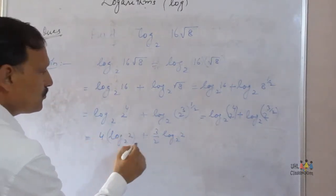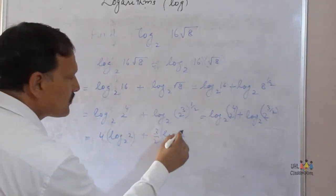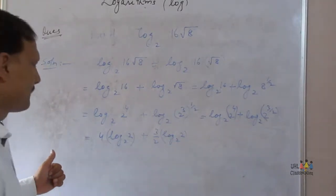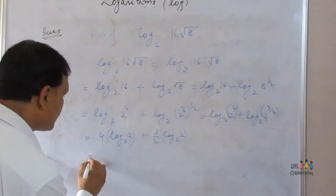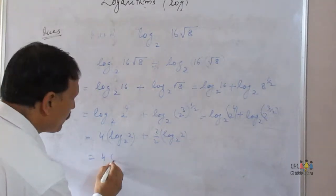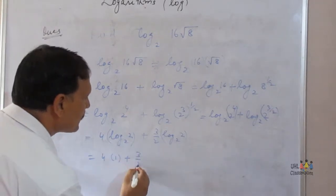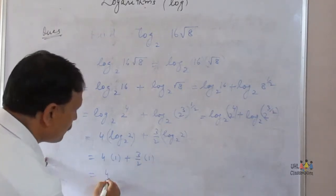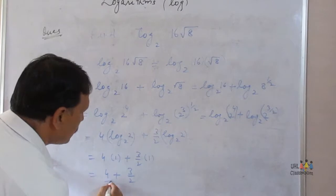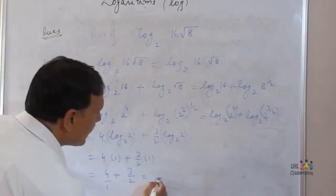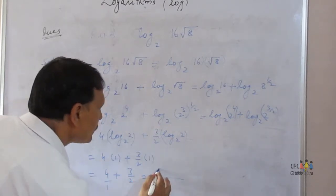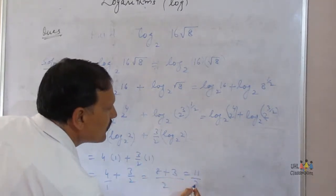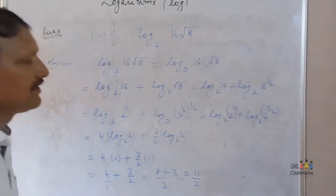Now log of 2 to the base 2 is equal to 1. So that gives us 4 into 1 plus 3 by 2 into 1, which is 4 plus 3 by 2. Taking LCM 2, that is 8 plus 3, which equals 11 by 2.